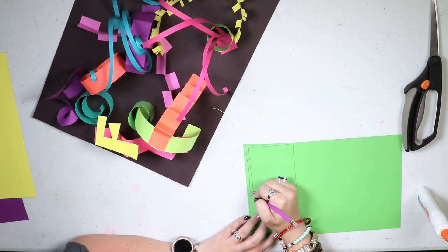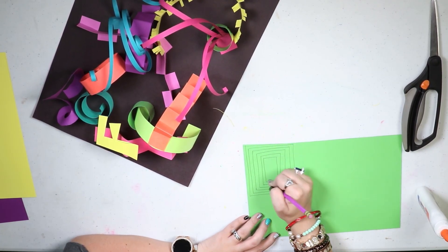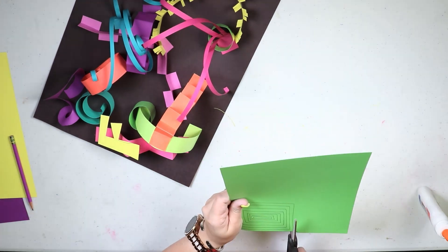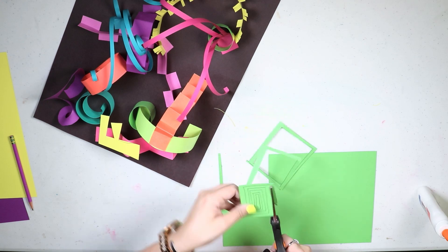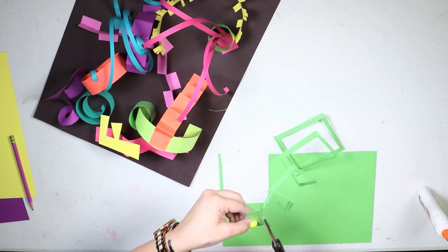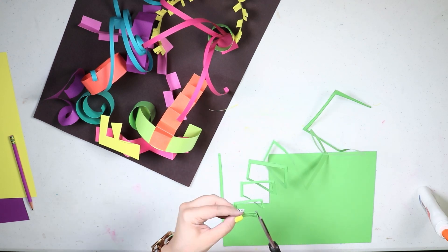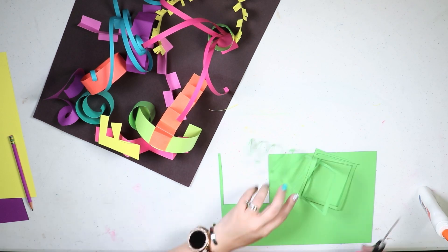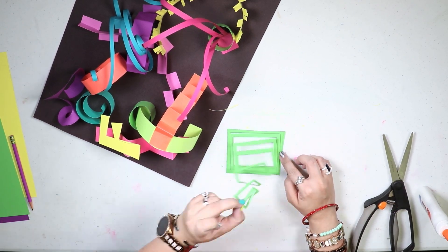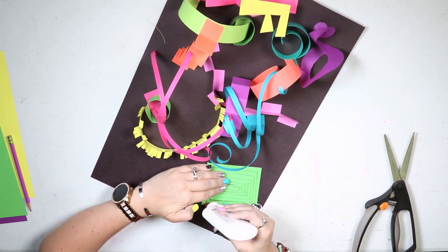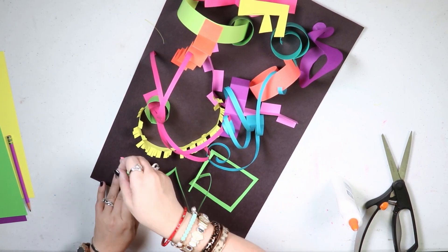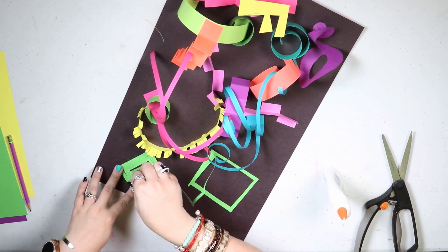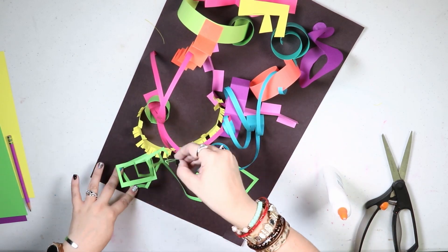Then I decided to do another spiral but this time a square shape. So I just drew squares inside of each other and followed along the lines with my scissors. Then I flipped it over so that you don't see the pencil lines and I glued it down on the page and picked up the center and pulled it across and I'm only gluing in just a few areas.